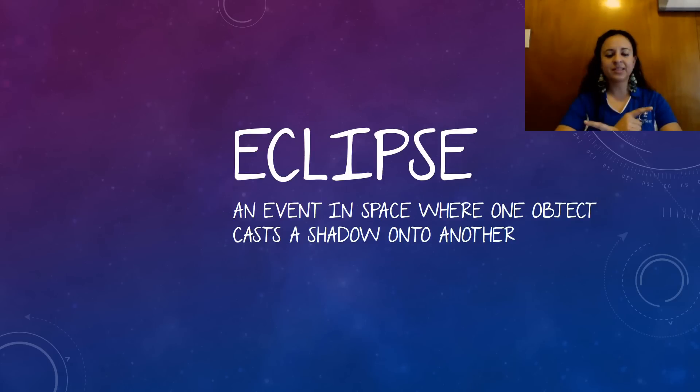An eclipse is an event in space where one object casts a shadow onto another. So what is an eclipse? An eclipse is an event in space where one object casts a shadow onto another.